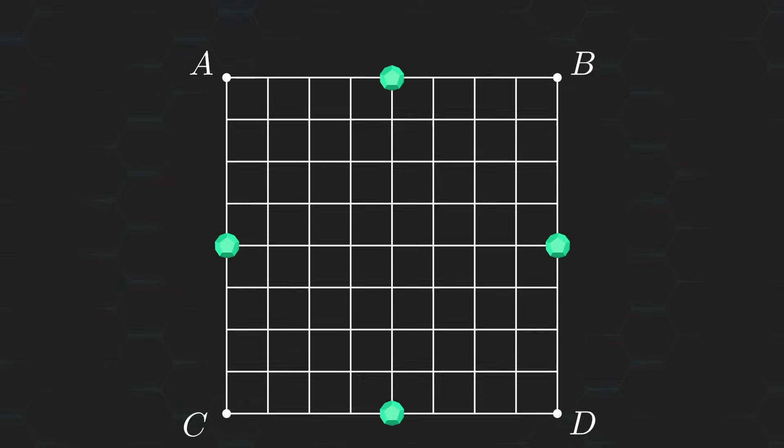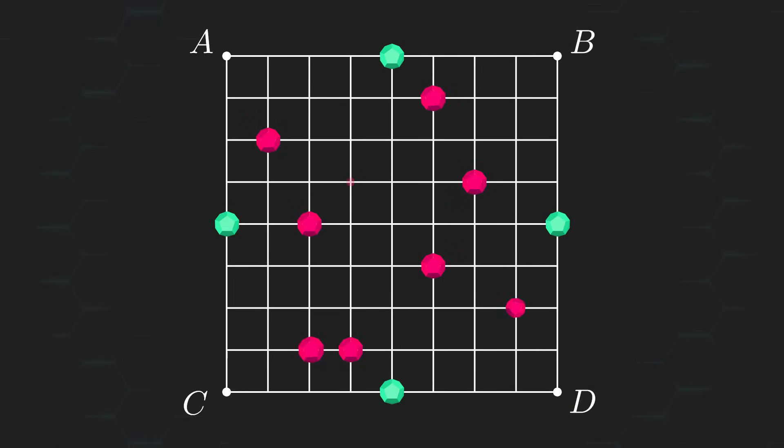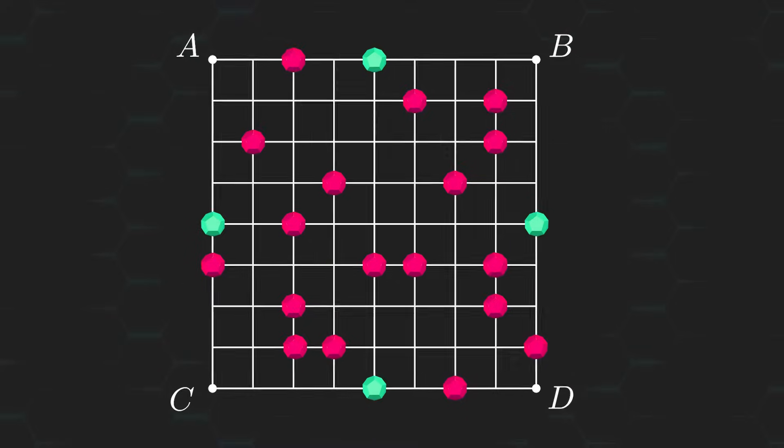Alright, here's my question to you guys. Does the player going first have a winning strategy this time around, or are they still doomed to lose? And again, how many redstones will be on the board by the end of the game if both players play optimally?